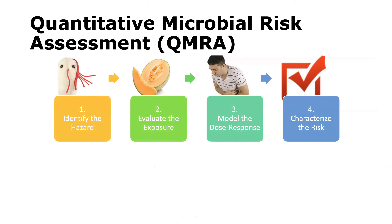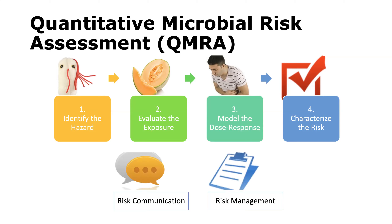The last topic is quantitative microbial risk assessment, or QMRA. There are four major steps: first, identify a hazard; second, evaluate the exposure route; third, model the dose-response relationship; and fourth, characterize the risk. Two additional steps follow: risk communication, which involves communicating risk to the public, and risk management, which involves developing strategies to manage risk to acceptable levels.